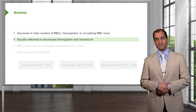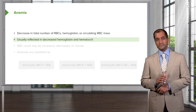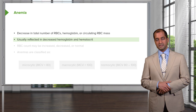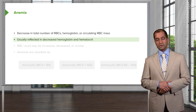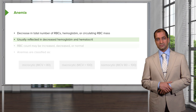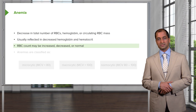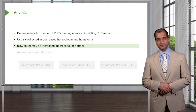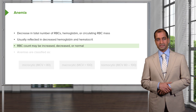Hematocrit — you want to think of approximately 40%, and if you find something much below 33%, you know your patient is in the realm of anemia most likely.